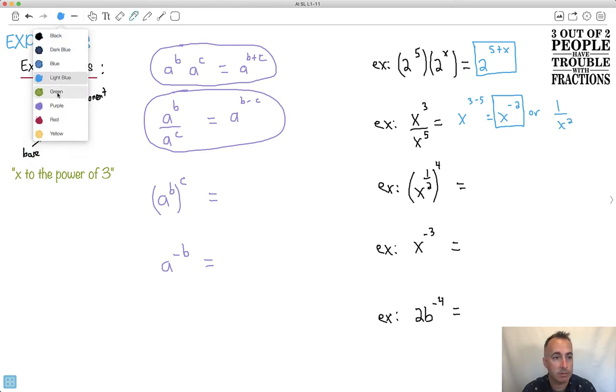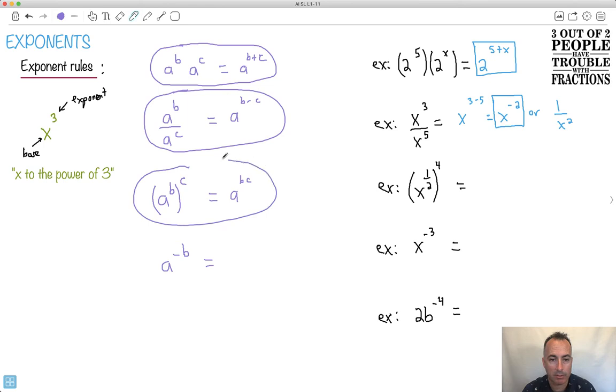Let's do the next one. A to the b to the power of c. Do you see? I'm taking a base, raising it to an exponent and raising that to an exponent. In this case, what we do, we multiply the two. So we say it's b times c. So this is a to the power of b to the power of c is a to the bc.